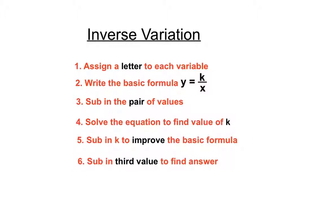I'm hoping you've got the hang of the steps we take. We assign a letter to each variable, like N for number of people and T for time. Write the basic formula, but watch out for variations with squares and cubes. Sub in the pair of values, solve the equation to find k on its own, write the improved basic formula, and then sub in any values to find our final answer.